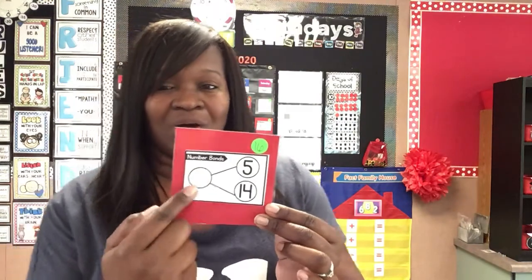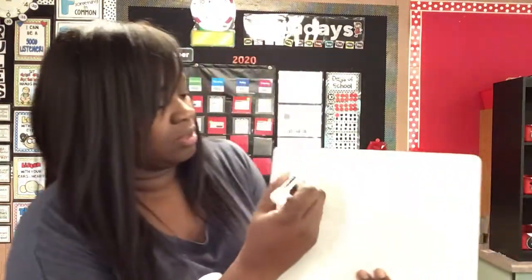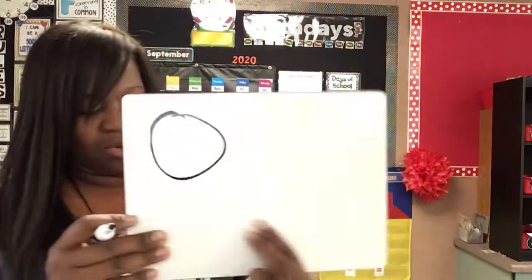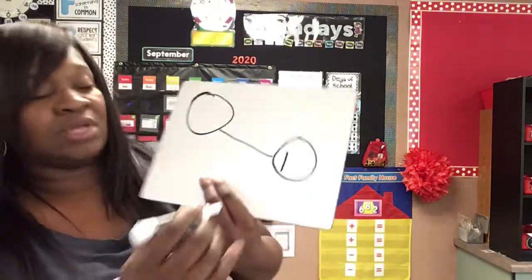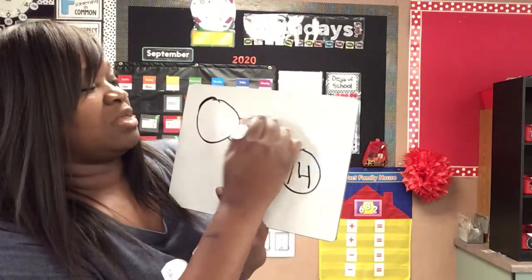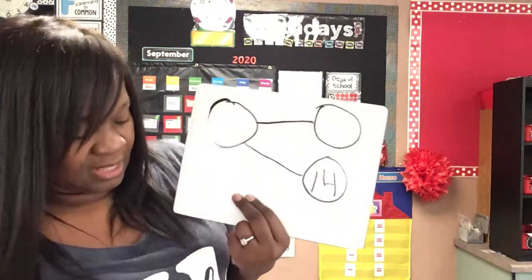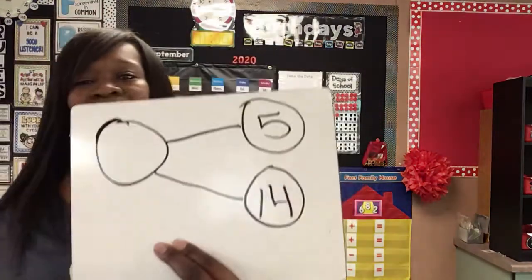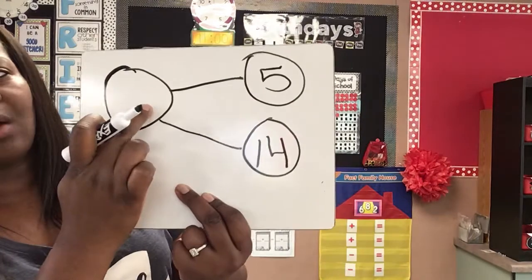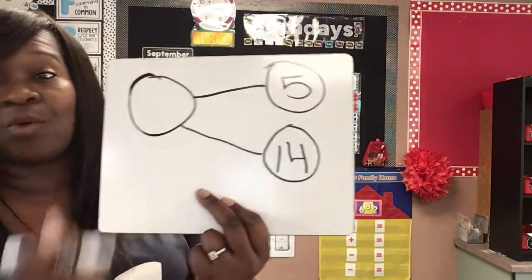Here's a part, here's another part, and it's going to equal a whole. Now, instead of me doing it way back there where you can't see, I decided to bring up a whiteboard. So I know that one of the parts is 14, and one of the parts is five. We have to figure out what is the whole.